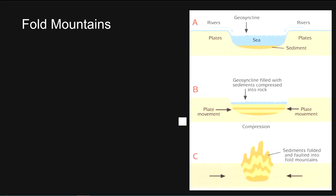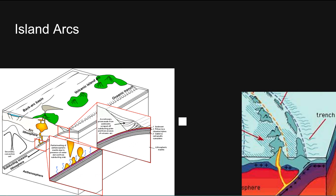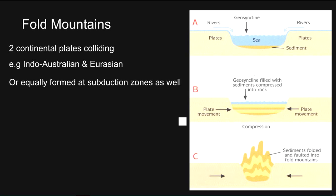Fold mountains form where two continental plates collide. An example is the Indo-Australian and Eurasian plates. They can also form at subduction zones. Plate convergence causes the folding and uplift of sediments from the shallow ocean floor — sedimentary rocks are squeezed upward, as shown in the diagram.